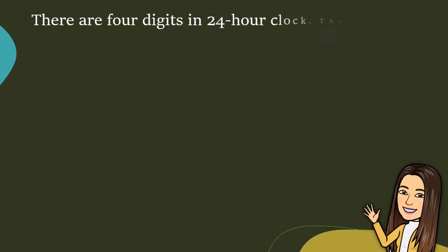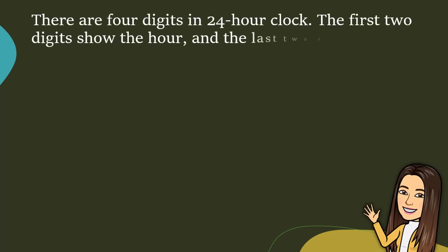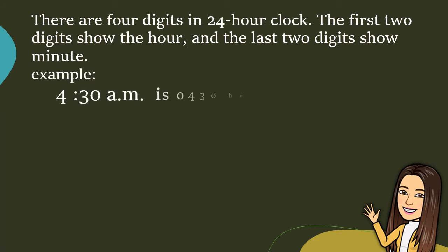There are four digits in 24 hour clock. The first two digits show the hour and the last two digits show minute. Example, 4:30 a.m. is 0430 hours.